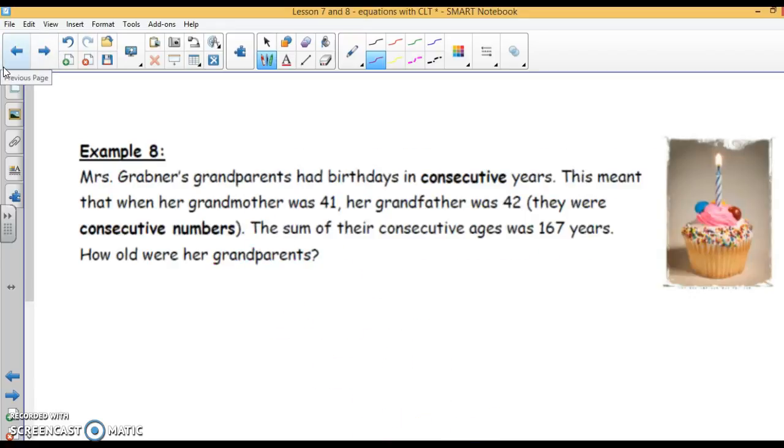Mrs. Grabner's grandparents had birthdays in consecutive years. This meant that when her grandmother was 41, her grandfather was 42. They are consecutive numbers. Now, before we do this problem, I want to talk about consecutive numbers. So consecutive means next, right?